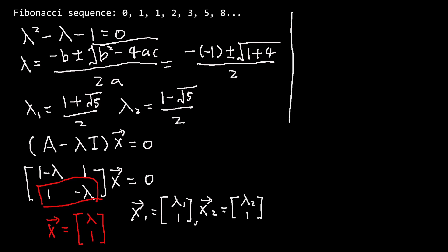We have the eigenvalues and eigenvectors for A. Now let's find the coefficients C_1 and C_2. C_1 x_1 plus C_2 x_2 equals the value in the initial state. The eigenvectors and U_0 are given. C_1 and C_2 are unknown.